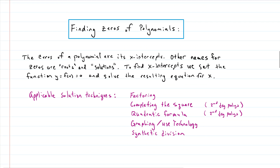Now, finding zeros of polynomials. First of all, what is a zero? The great thing is that zeros are just x-intercepts. They use the term zero because the y-coordinate of the x-intercept is zero and the function value is zero at that point. There are other names you can use — root, solution, zero, x-intercept — they all mean the same thing. To find the x-intercept, you take the function they give you, set it equal to zero, and then solve the resulting equation for x.